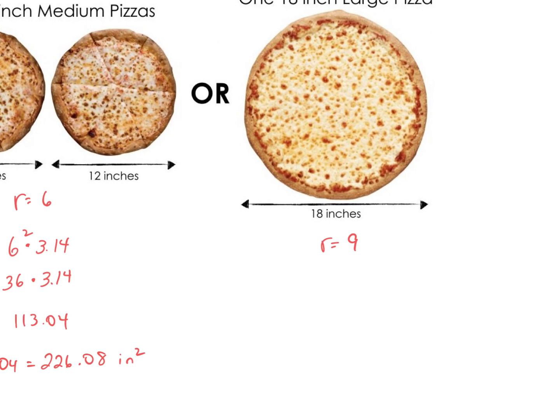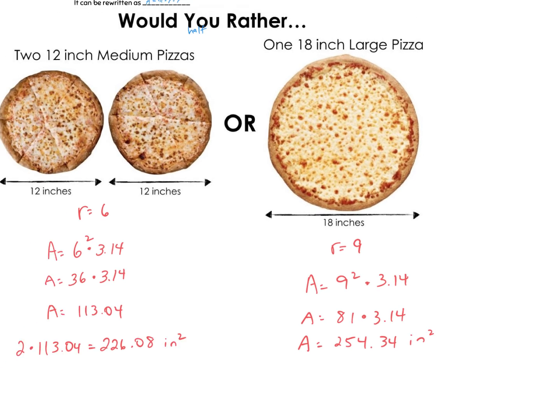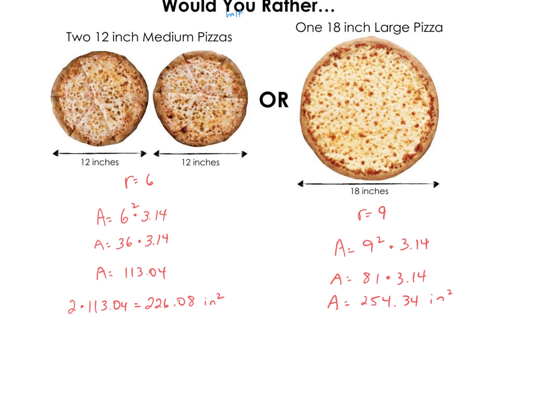For the bigger pizza I'm going to do 9 squared times pi. 9 squared is 81. And 81 times 3.14 is 254.34 inches squared. So we can see that even though it may seem like the two 12 inch medium pizzas are going to offer more, the 18 inch is actually better for a bigger group. You get a little bit more. Not much but a little bit more. And in reality it probably doesn't cost as much either.